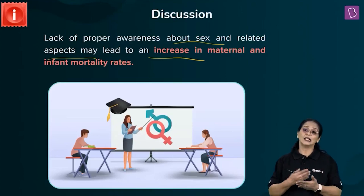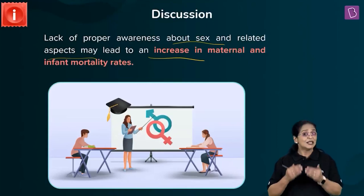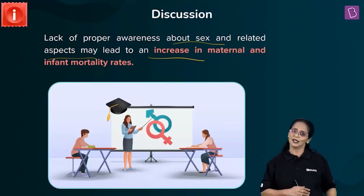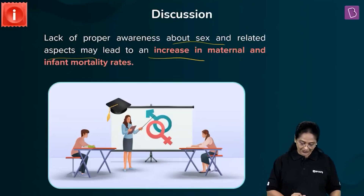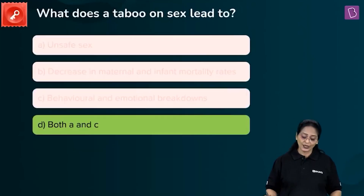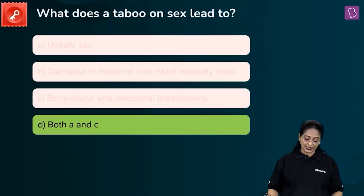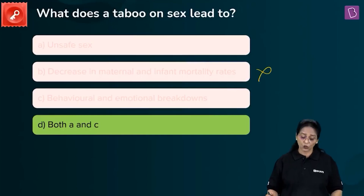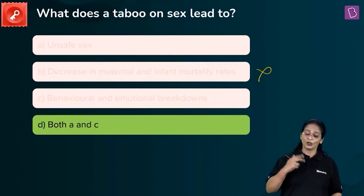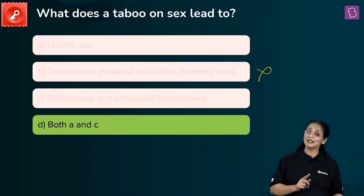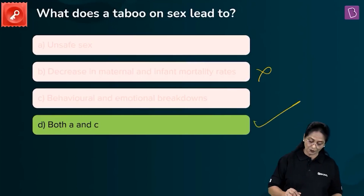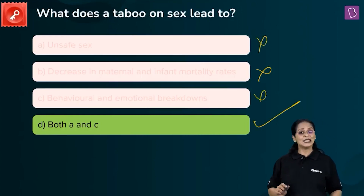Maternal mortality rate is the number of maternal deaths that takes place per 100,000 live births. IMR or infant mortality rate refers to the number of infant deaths per 1,000 live births. So, what does a taboo on sex lead to? Unsafe sex — yes. Decrease in maternal and infant mortality rates — no. Behavioral and emotional breakdowns — yes. You have two correct answers, so option D, which says both A and C are correct, is the right answer. Eliminate A and C individually because D encompasses both.